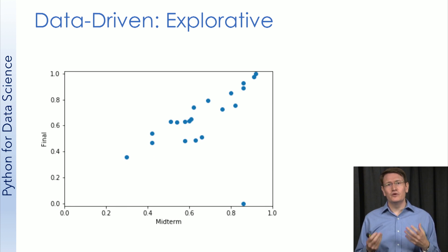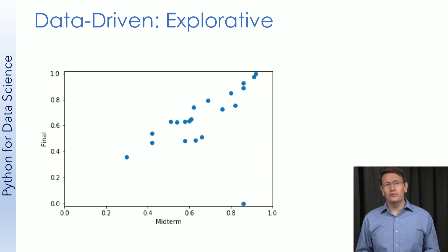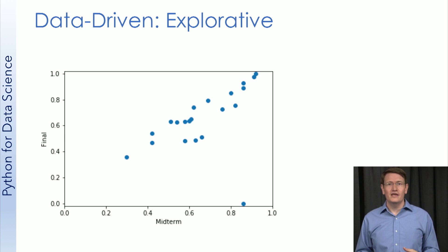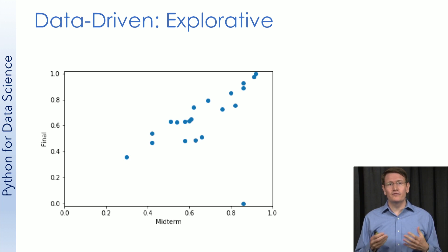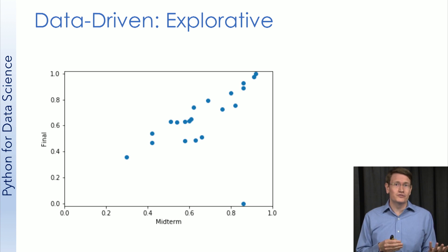The example of the correlation between midterm and final exam scores from our previous video is likely explorative. I might create a plot like this when trying to better understand the relationship between these exam scores in my class, and its results would likely cause me to explore the data more. With explorative data visualizations, I'm not going to spend as much time polishing the appearance — so long as I can interpret it, that's fine. I'll often want to quickly plug in different parts of my dataset to explore different relationships, say homework scores against the final exam rather than midterm against the final exam.